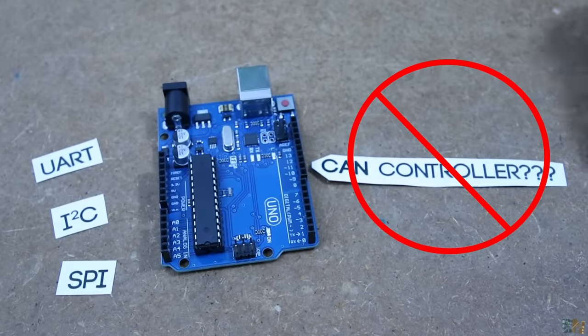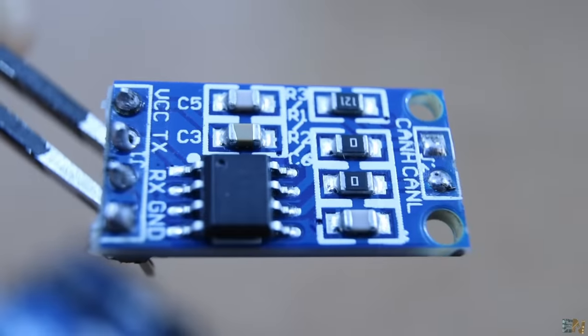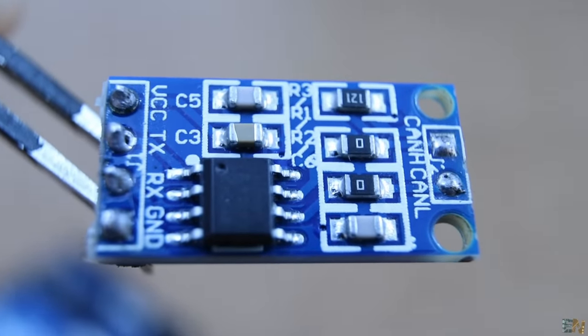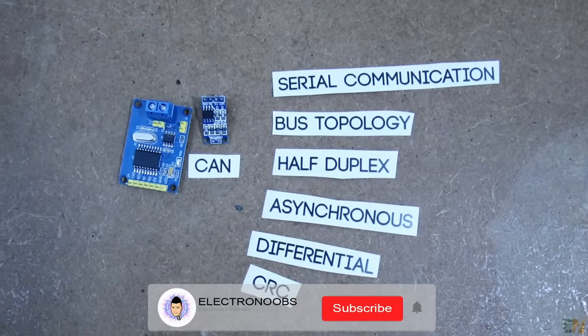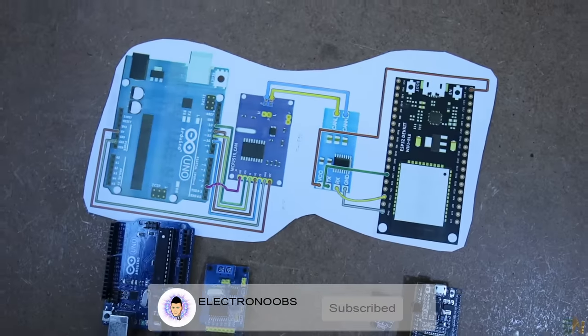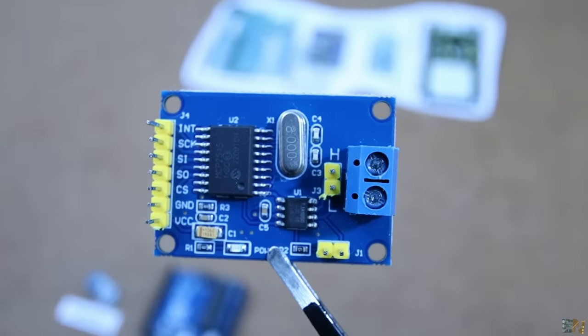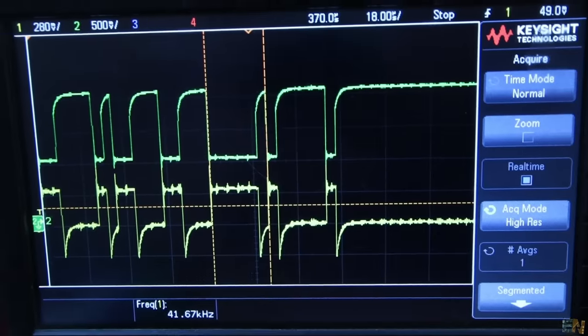So what is CAN, how it works internally, why it's better or worse than other types of serial communications and why we use this type of serial data transfer for the entire automobile industry. We will check the signals, explain how they work and establish a CAN connection between an Arduino and an ESP32. So guys, let's get started.